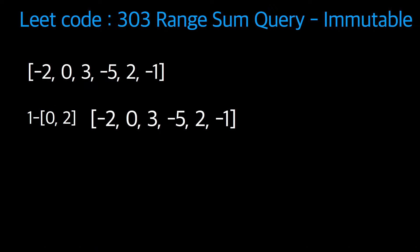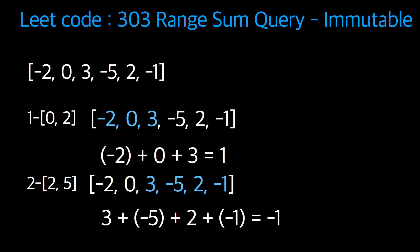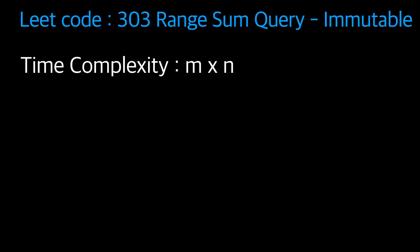Looking at the array, minus two, zero, and three are the elements between indices zero to two. We need to sum those: minus two plus zero plus three equals one. The next query is two to five - checking the array gives us three, minus five, two, minus one. Adding all those elements gives minus one. Now coming to the time complexity.